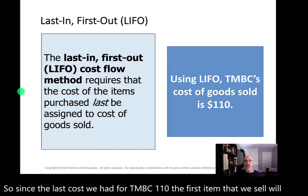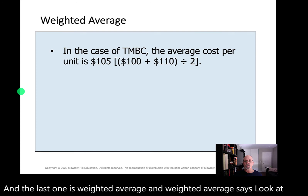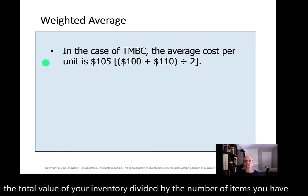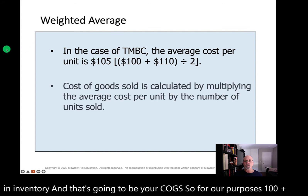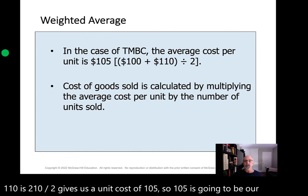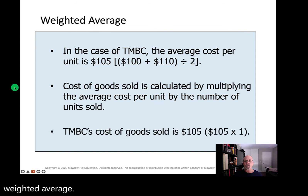The last method is weighted average. Weighted average says look at the total value of your inventory, divide it by the number of items you have in inventory, and that's going to be your COGS. So for our purposes, $100 plus $110 is $210, divided by 2 gives us a unit cost of $105. Calculated by multiplying the average cost by the number of units sold — we sold 1 — COGS is $105.